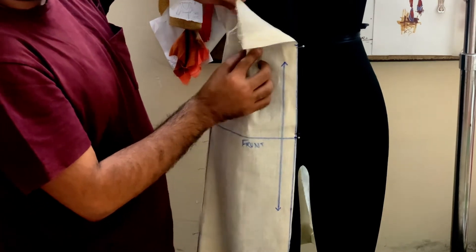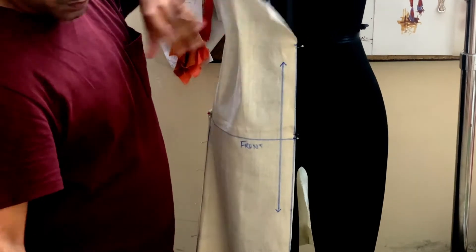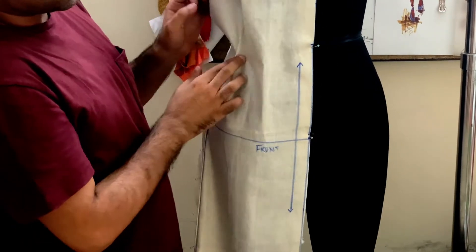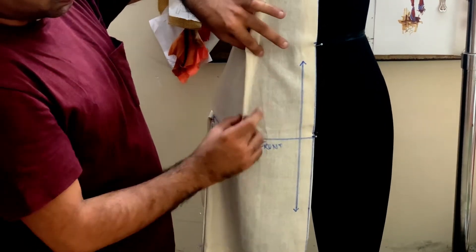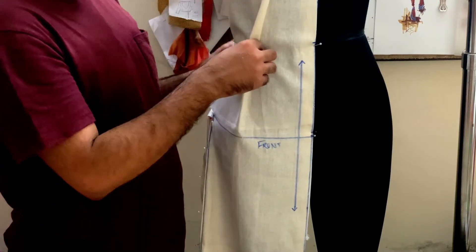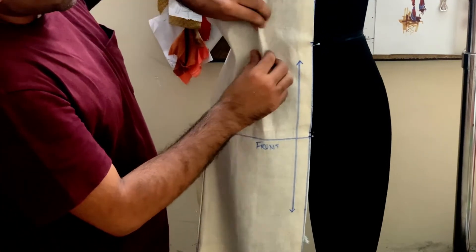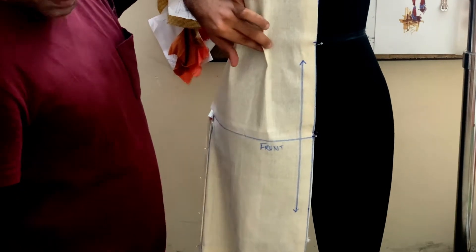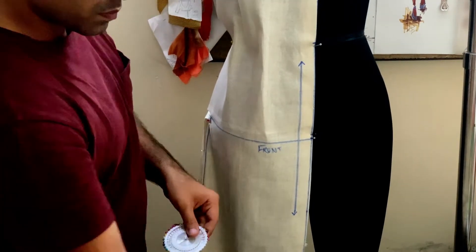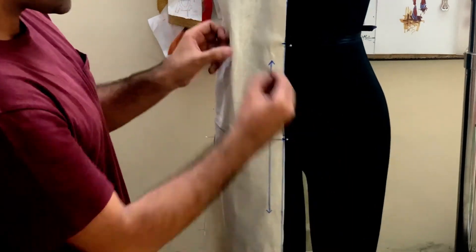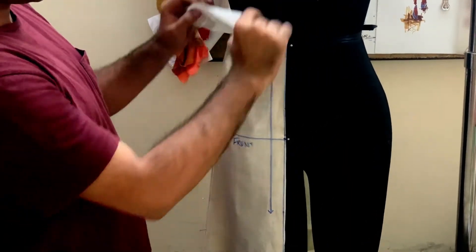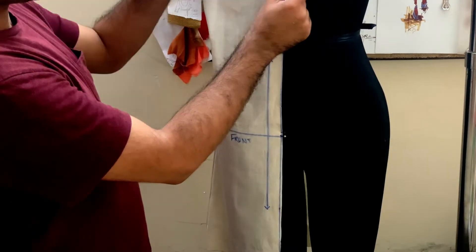You can also make a single dart, and the basic skirt generally have double darts. The one which falls on the princess and the other one falls between the princess and side seam. So you need to clip and divide the darts into two parts.